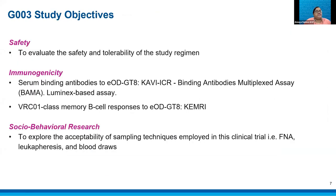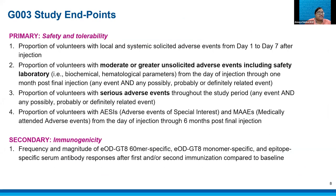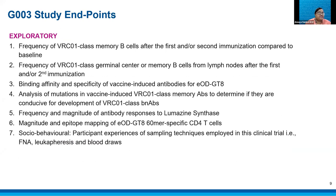The objectives and endpoints include safety and immunogenicity as key focuses in this Phase 1 study, as well as a social behavioural research component. Safety and tolerability are central — we'll assess reactogenicity, adverse events of special interest, and medically attended adverse events. For immunogenicity, we'll look at specific antibody responses to the antigens after each dose. Our exploratory endpoints cover the B cell response, particularly the frequency of VRC01-class memory B cells after immunization. Social behavioural components are included in our exploratory endpoints so we don't lose track of this as the trial develops.